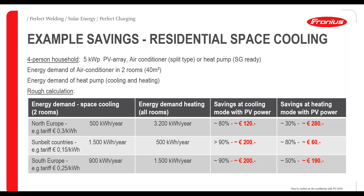The second example is for Sunbelt countries with a relatively lower energy tariff of 50 cents per kilowatt hour. There, 1500 kWh per year are needed just for space cooling due to higher temperatures, and only 500 kWh per year for room heating. In this case, lots of energy from the PV system can be used for cooling, raising self-consumption up to 90 percent and saving 200 euros. For heating, savings are a bit less due to lower heating demand, but still 60 euros can be saved.